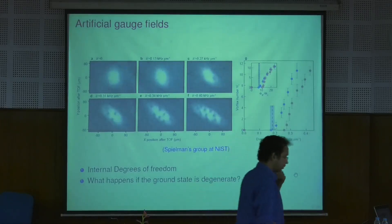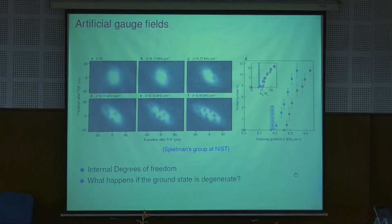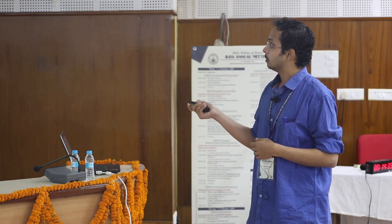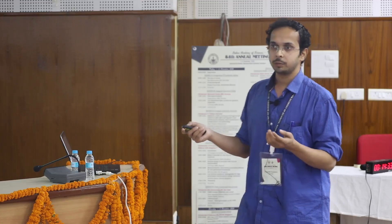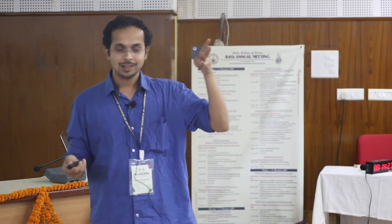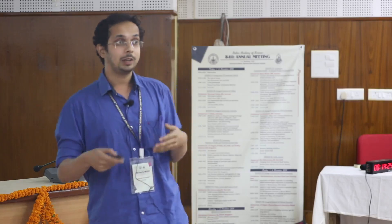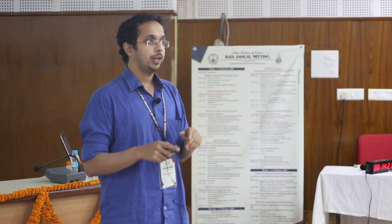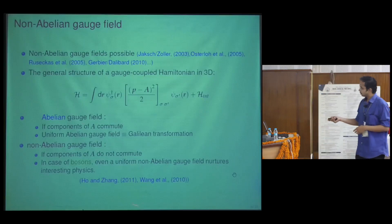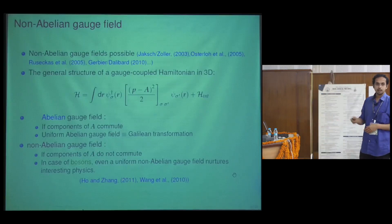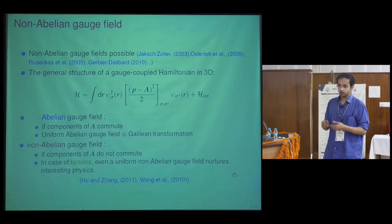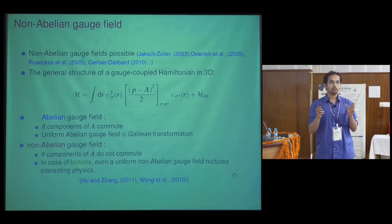One may wonder what happens in the hyperfine manifold when the ground state is doubly degenerate. It has been shown that instead of the usual vector potential A — whose curl gives the magnetic field B and whose components commute — if the ground state is degenerate, you obtain non-Abelian gauge fields, where the components of A do not commute. It was also shown in some work that these non-Abelian gauge fields have interesting effects in bosonic systems.